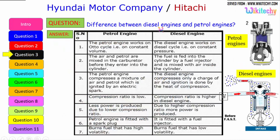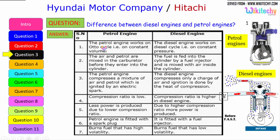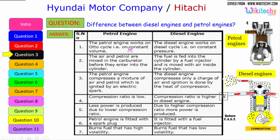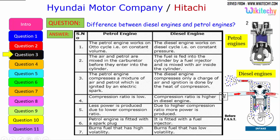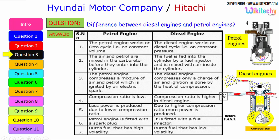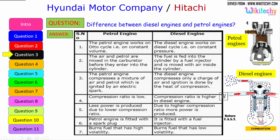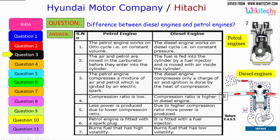Let us see the difference between the diesel engine and the petrol engine. The petrol engine works on the Otto cycle, therefore on constant volume, whereas the diesel engine works on the diesel cycle, on constant pressure. The air and petrol are mixed in the carburetor before they enter the cylinder, whereas in a diesel engine the fuel is fed into the cylinder by a fuel injector and is mixed with the air inside the cylinder.